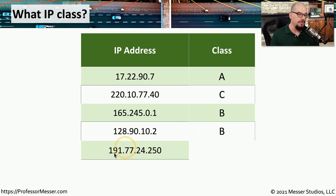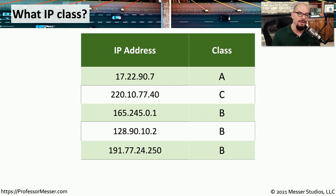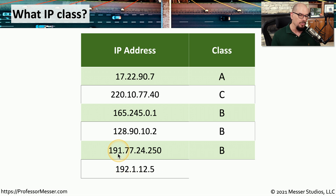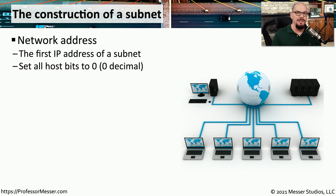128.90.10.2 begins with 128, which means it is also a Class B address. For the IP address 191.77.24.250, the first octet is 191, which falls into the Class B category. Lastly, 192.1.12.5 — that 192 is one more than 191, but that is the difference between a Class B and a Class C address.